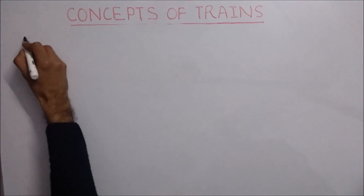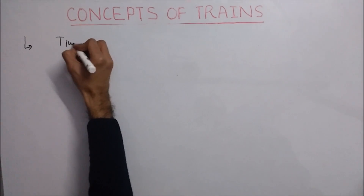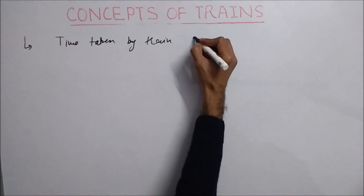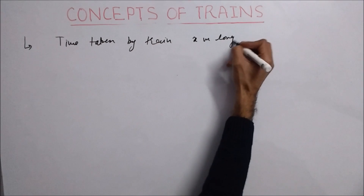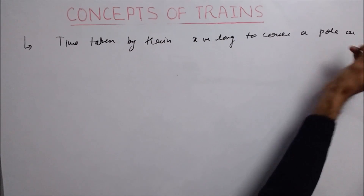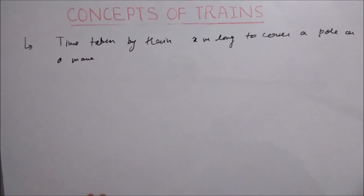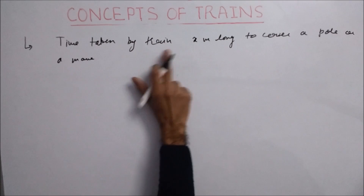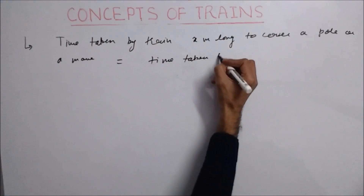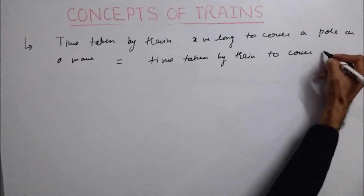The first type of question involves the time taken by a train to cross a pole or a man. Suppose a train x meters long crosses a pole or a man. This time will be equal to the time taken by the train to cover x meters.